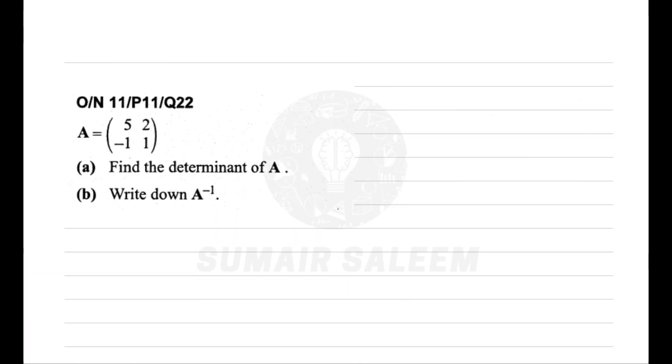Let's practice a few questions. Here it says find determinant. How will I find determinant? AD: A is 5, D is 1, 5 into 1, minus BC: 2 into minus 1. That makes 5 plus 2, which is 7.